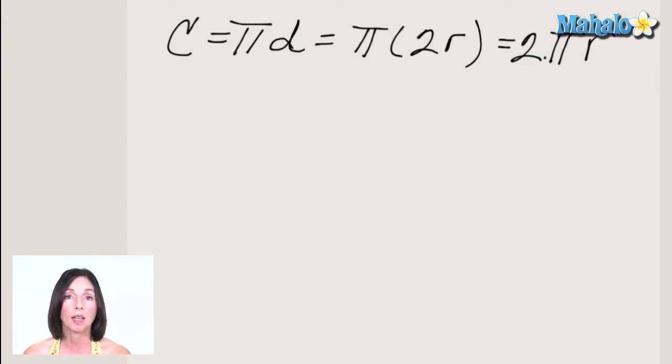C equals pi times the diameter. Now, since the diameter is two times the radius, you can just put that in instead of the diameter. So it's pi times two times r, or more commonly, you'll see it written two pi times the radius.